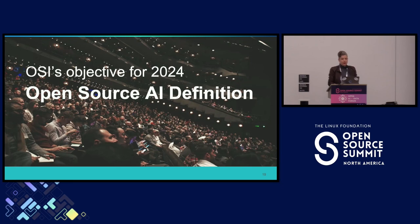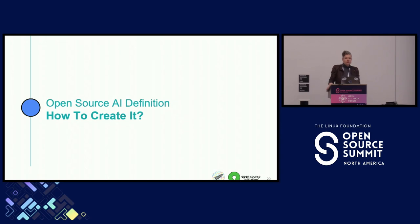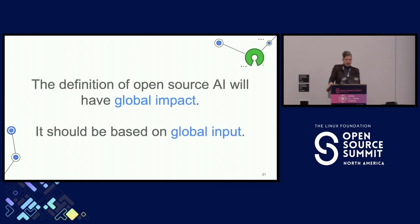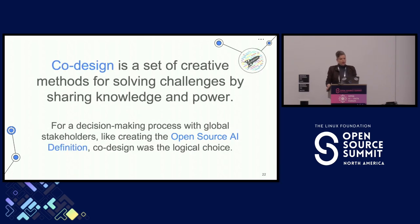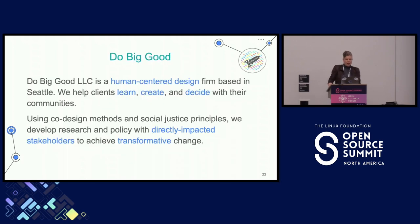The 2024 goal for the Open Source AI Definition is to create it and have a stable version by October. Because the definition for open source AI will have a global impact, it should be based on global input. We're using co-design, which is basically a set of creative methods for solving challenges by sharing knowledge and power — you can imagine why that seems appropriate for a definition of open source AI.